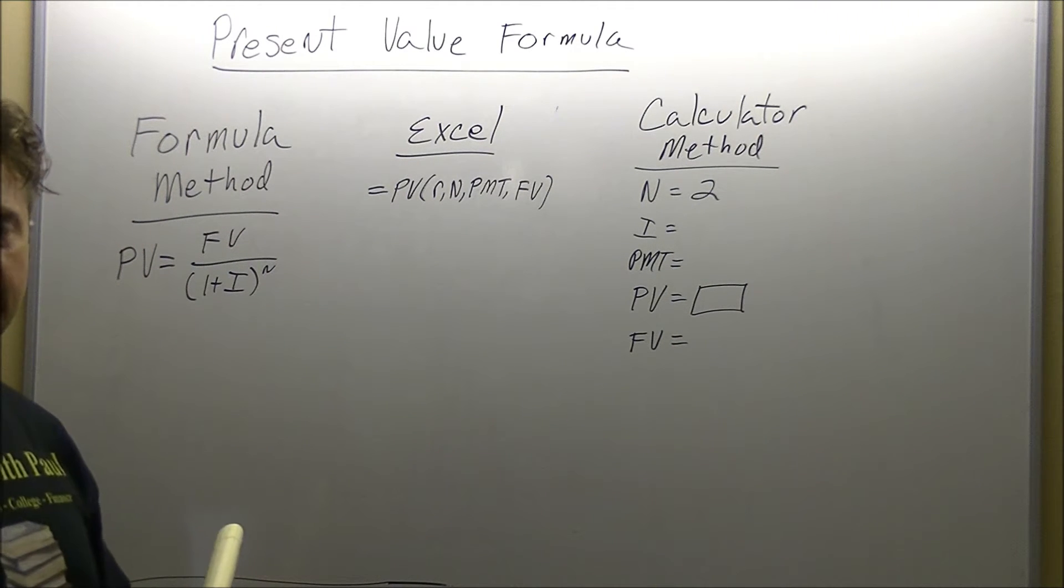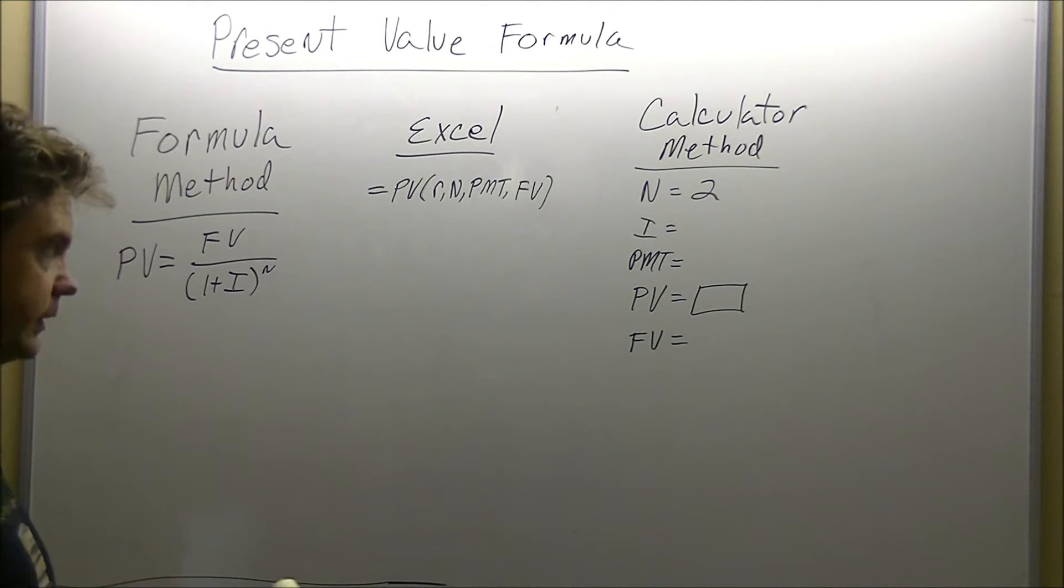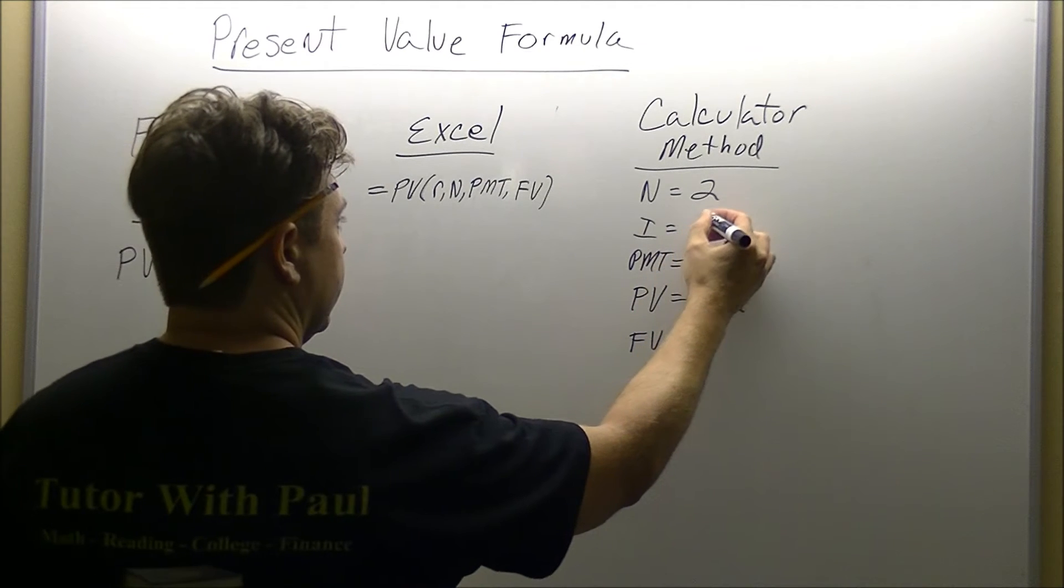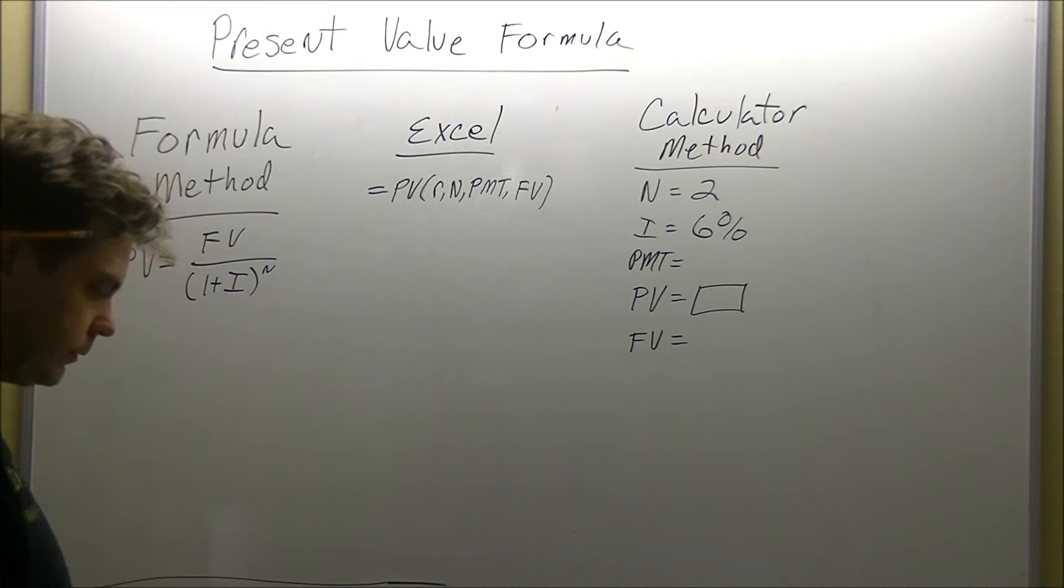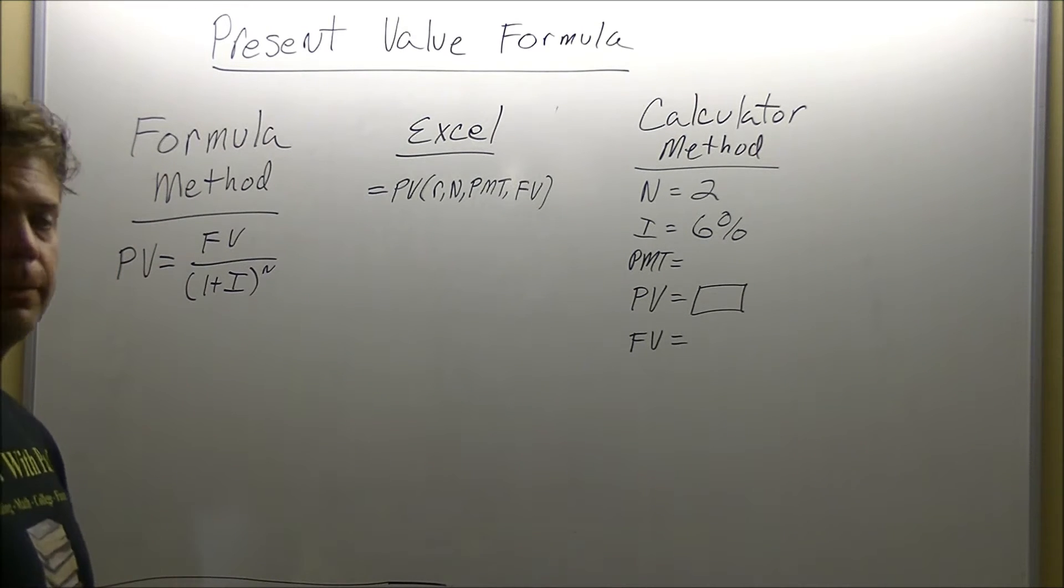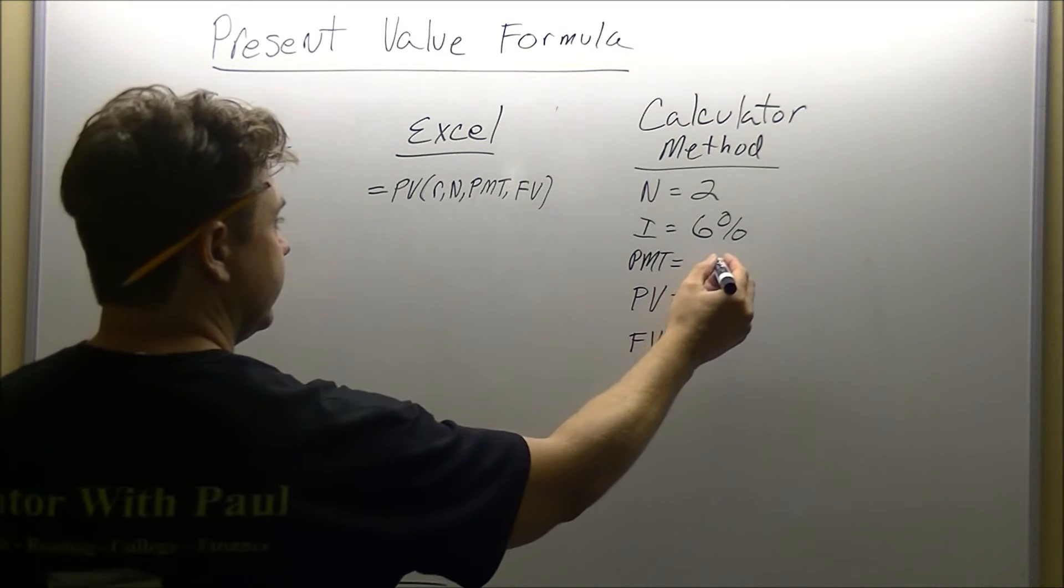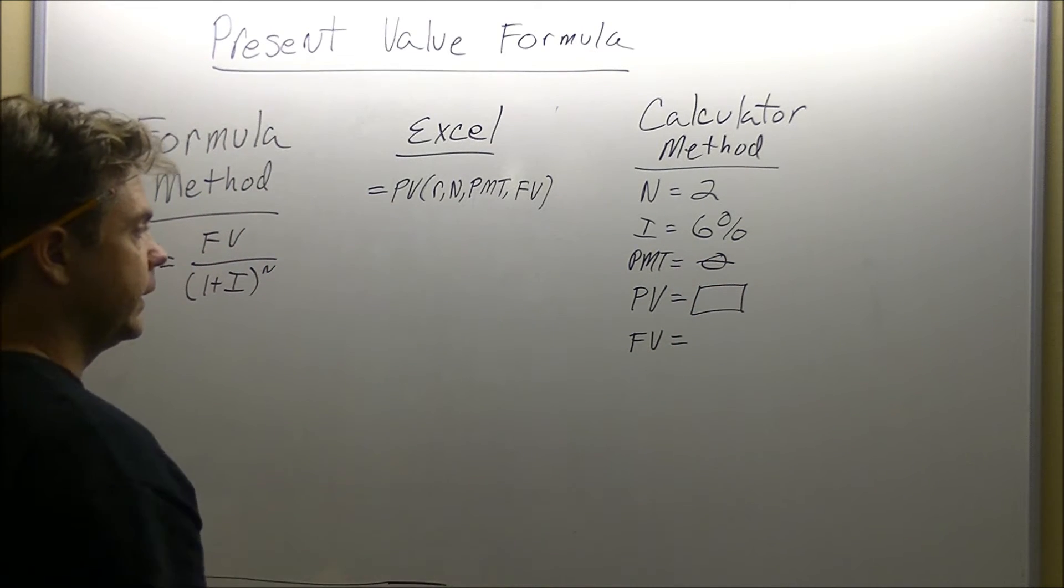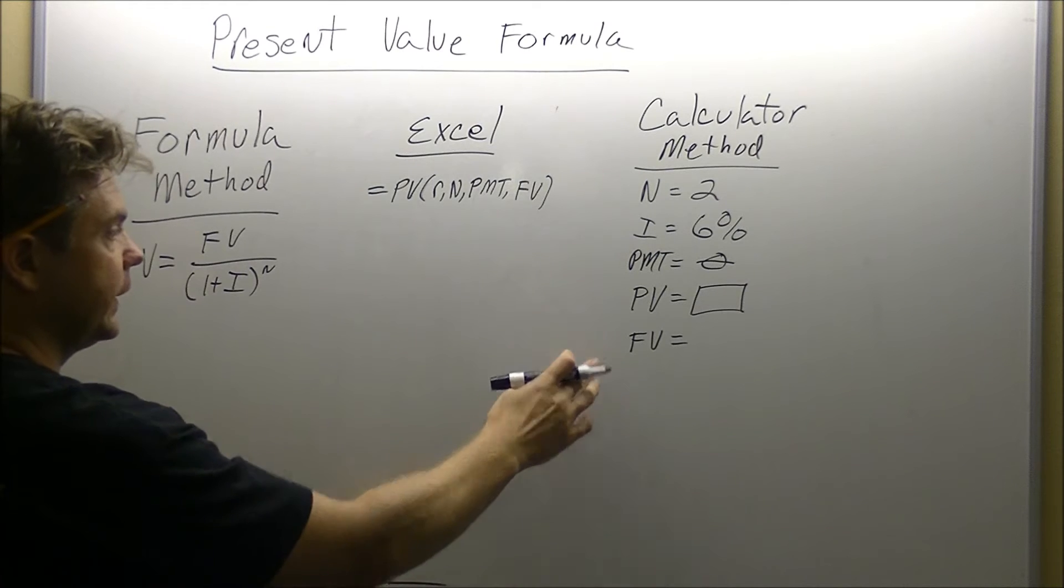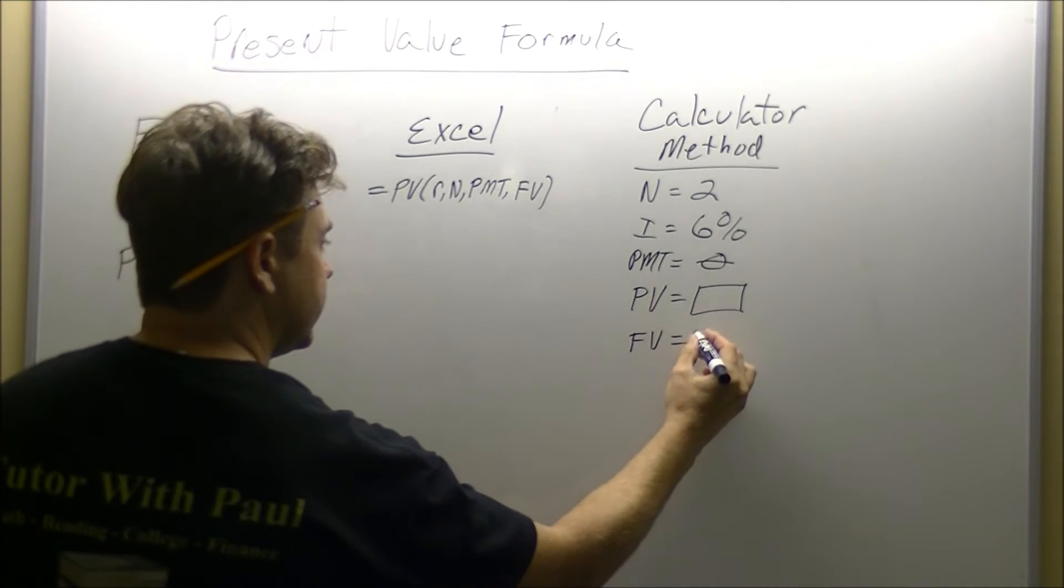The problem also indicated that the interest rate is 6%. For the problem, there is no payment, so we're going to enter a zero. We are looking for the present value, and for the future value, the problem stated is going to be $5,000.